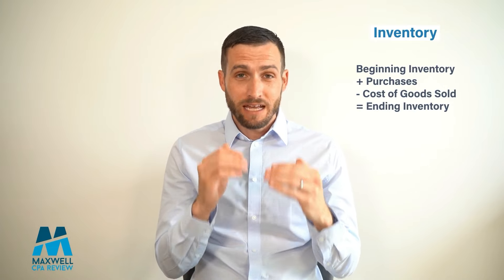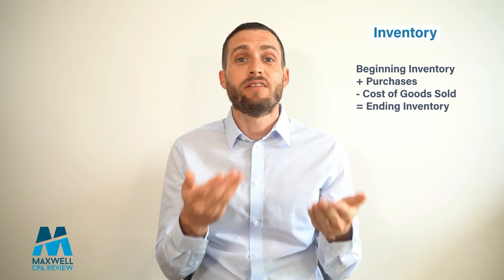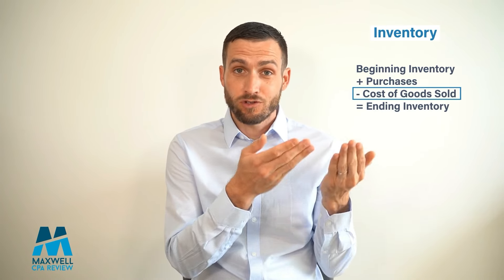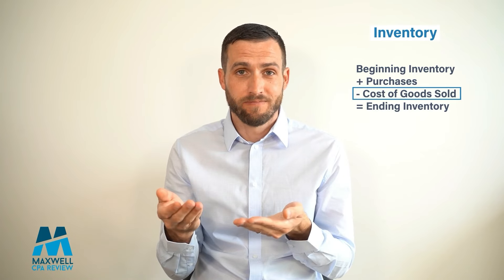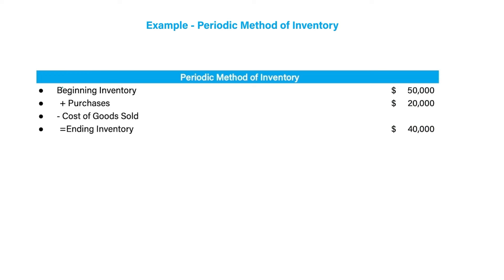Next, you want to know what increases and decreases inventory. You have beginning inventory, then you purchase new inventory — credit cash, debit inventory — then you sell inventory, which is debit cost of goods sold and credit inventory. The formula is: beginning inventory plus purchases minus cost of goods sold equals ending inventory. You may be given three of these values and have to solve for the fourth.